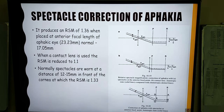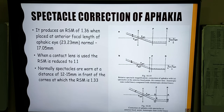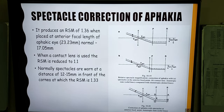Moving on to the spectacle correction of aphakia. Aphakia is basically the absence of the lens within the eye. The refractive power of the eye is majorly contributed by the anterior surface of the cornea and the lens. If we have removed the lens from the eye, the refractive power of the eye will change, and similarly the anterior focal length of the aphakic eye will be different.